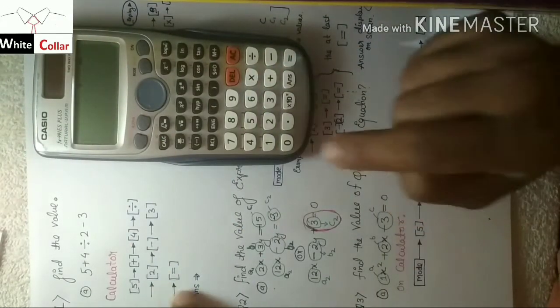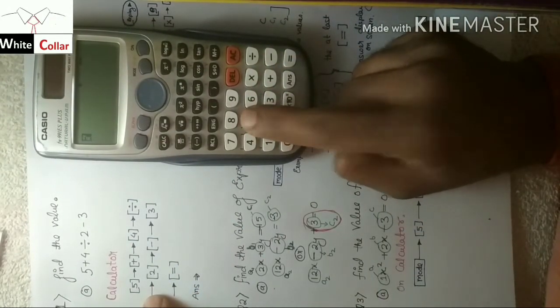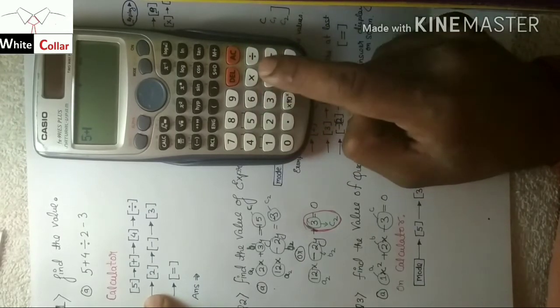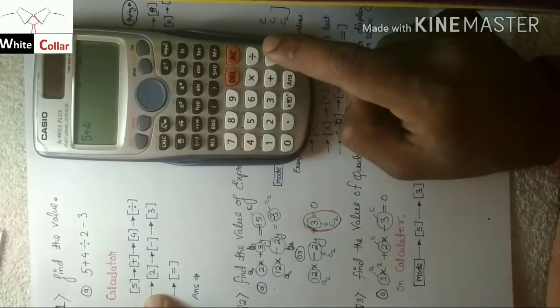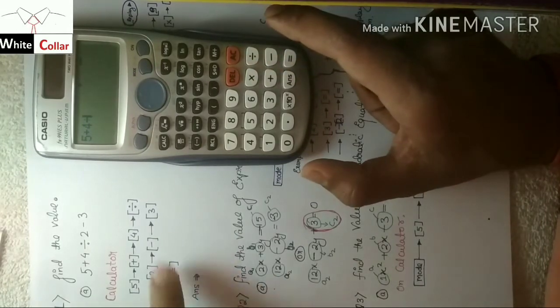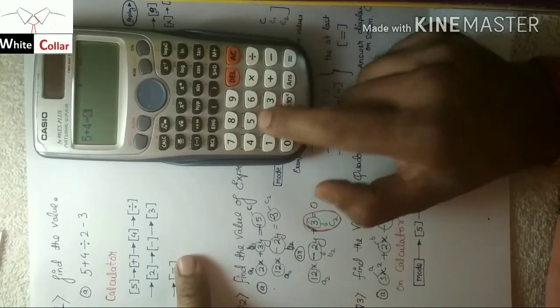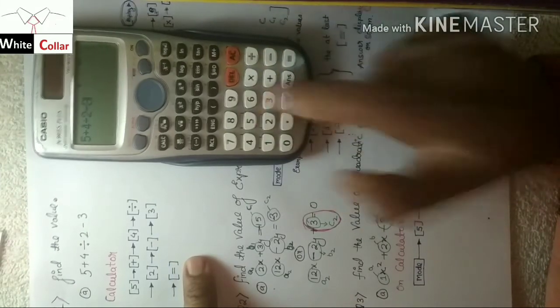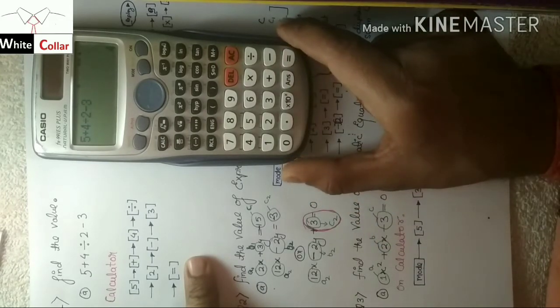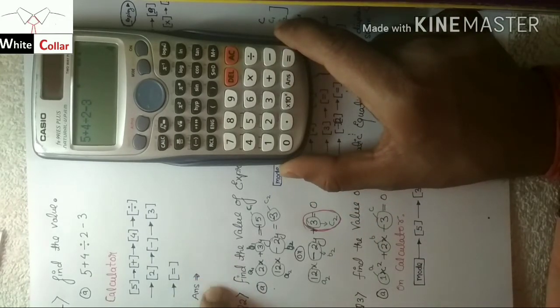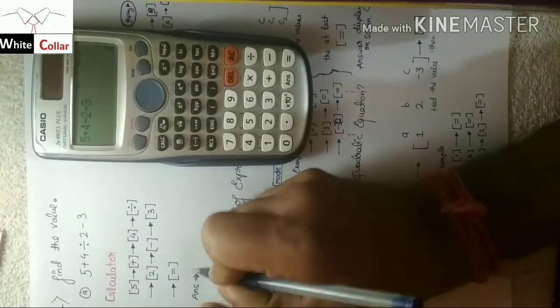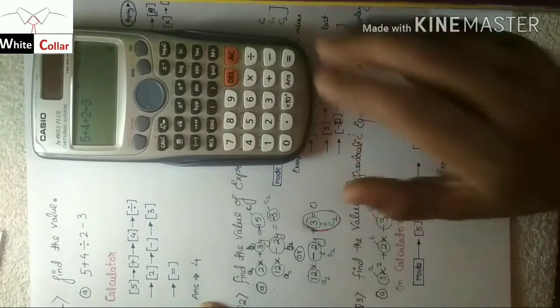We first have to turn this on. This is already on. Now 5 plus 4 divided by 2 minus 3 equals to 4. What is the value? The answer we're getting is 4.